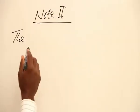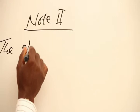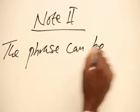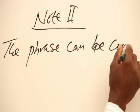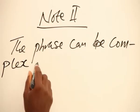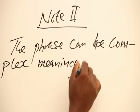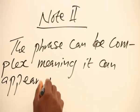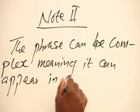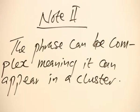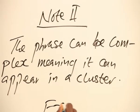Note 2. The prepositional phrase can be complex, meaning it can appear in a cluster or a string. That means we can have chains of prepositional phrases occurring in one sentence. Now let us take examples to illustrate this.